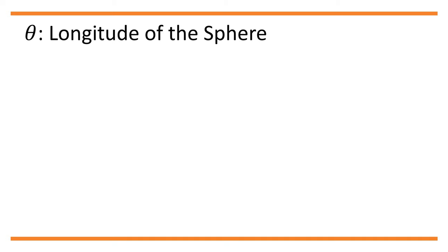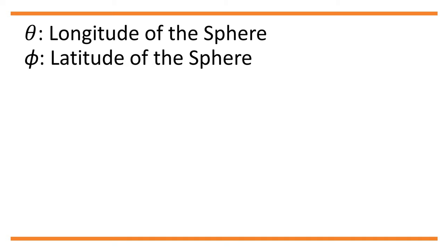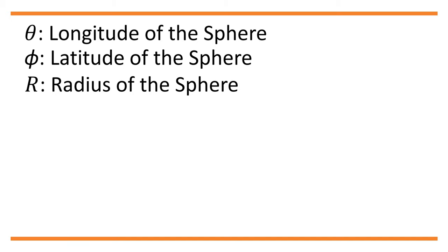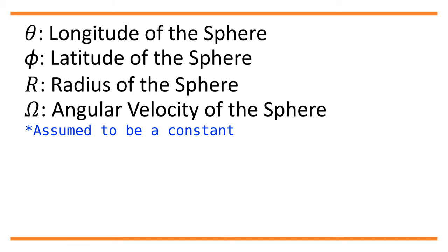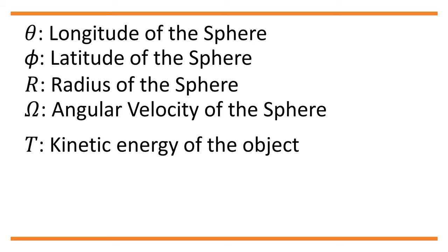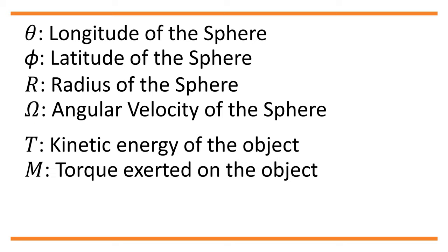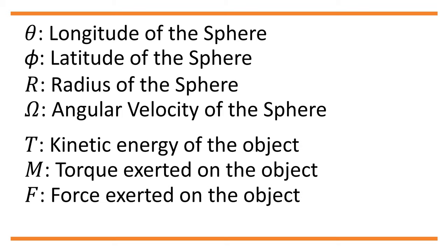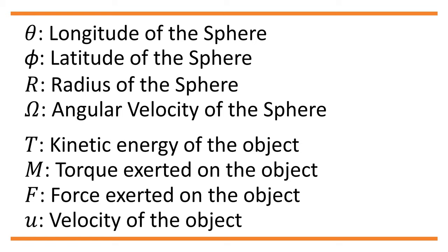In this video, we will demonstrate how this can be done for motions on a rotating sphere. We start by considering a point object with unit mass, using the following notations: θ (theta) is the longitude of the sphere, φ (phi) is the latitude of the sphere, R is the radius of the sphere, Ω is the angular velocity of the sphere, T is the kinetic energy of the object, M is the torque exerted on the object, F is the force exerted on the object, and u is the velocity of the object with respect to the rotating sphere.